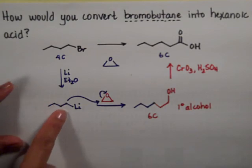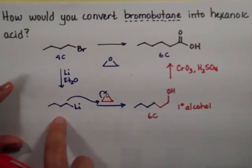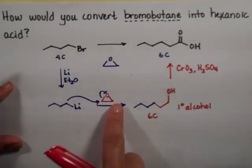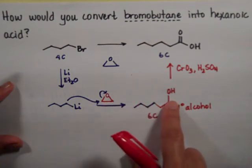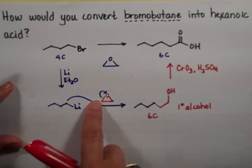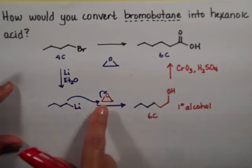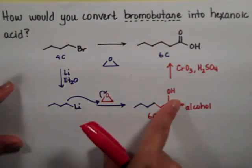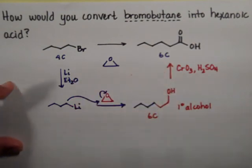So first you make either the Grignard or the organolithium — I made the organolithium. Then you throw in the epoxide. This particular epoxide doesn't matter which side you attack; you're always going to get the primary alcohol. Remember, you attack one carbon and the oxygen goes on the other carbon, then you oxidize to the carboxylic acid.